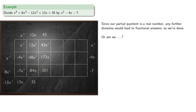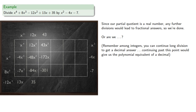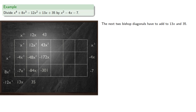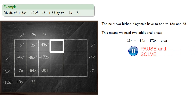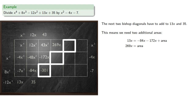Or are we? Remember that among integers you can continue long division to get a decimal answer — continuing past this point would give us a polynomial equivalent of a decimal. Well, no one does that, but we could. We do still need to finish out the problem, so we note that the next two bishop diagonals have to add to 13x and 35. This means we need two additional areas. Since we're done with the quotient, it doesn't make a difference how we split up the remaining area, but it's convenient to put it all into one rectangle.